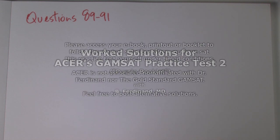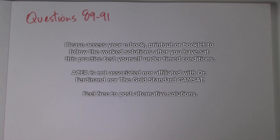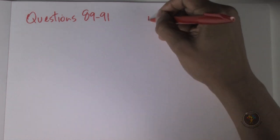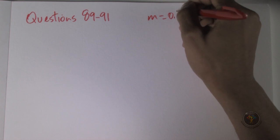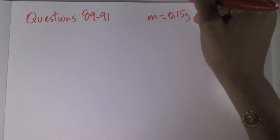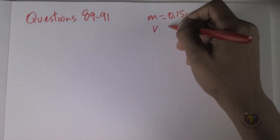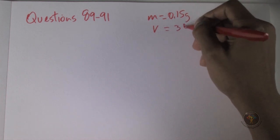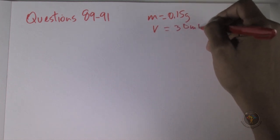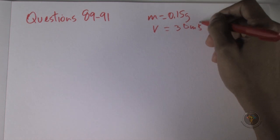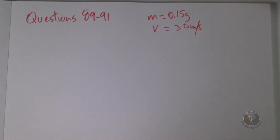Questions 89 to 91. We start with a ball of mass 0.15 kilograms traveling a straight horizontal path with a speed of 30. We have mass and speed, which means we have momentum — momentum is mass times velocity. Then it was a perfectly elastic collision.